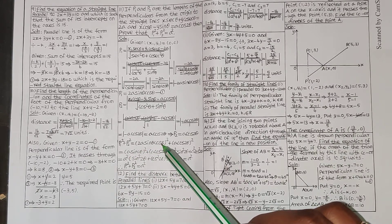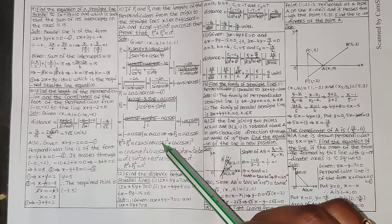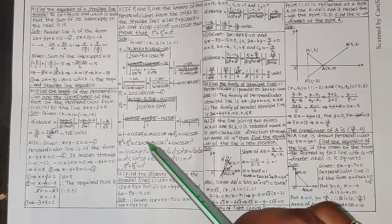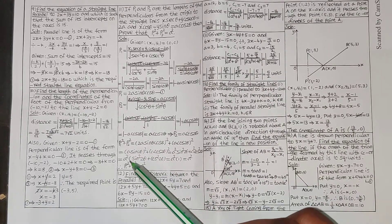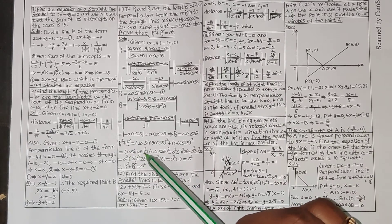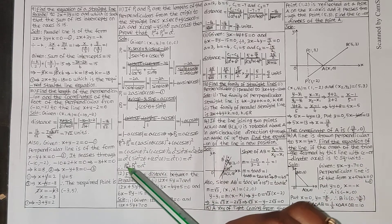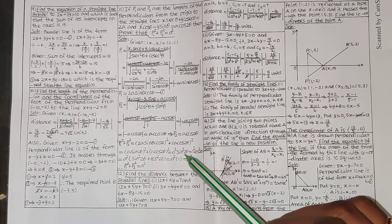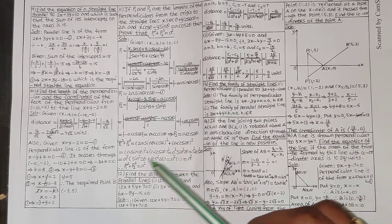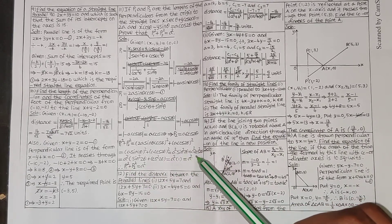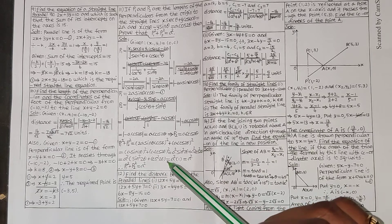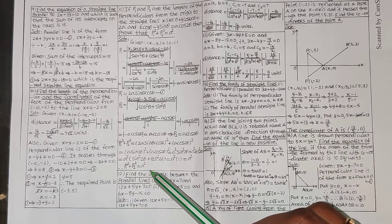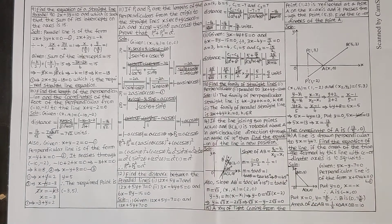p1 squared plus p2 squared equals 4a squared sin squared theta cos squared theta plus a squared cos squared 2 theta. Since 2 sin theta cos theta equals sin 2 theta, we have p1 equals a sin 2 theta. So p1 squared equals a squared sin squared 2 theta, and p2 squared equals a squared cos squared 2 theta. Therefore p1 squared plus p2 squared equals a squared times sin squared 2 theta plus cos squared 2 theta, and since sin squared plus cos squared equals 1, the answer is a squared. Hence p1 squared plus p2 squared equals a squared.